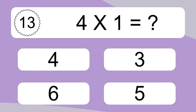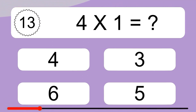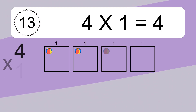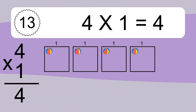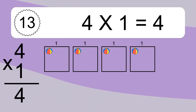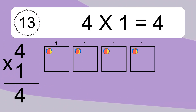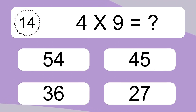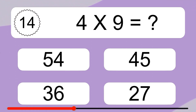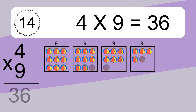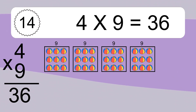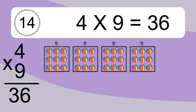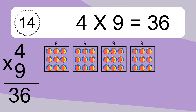4 x 9 equals what? 4 x 9 equals 36. We have 4 boxes and each box has 9 colorful balls inside. If you count all the balls in all the boxes together, you will have 4 x 9 balls. This equals 36 balls.